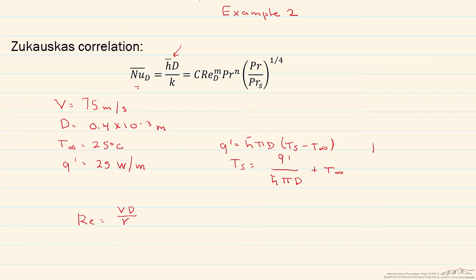Our N is going to be equal to 0.36 for a Prandtl number that's less than 10, and since this is air, it's more on the order of 0.7. And then we have this ratio of Prandtl numbers that takes into account the Prandtl number at the surface.